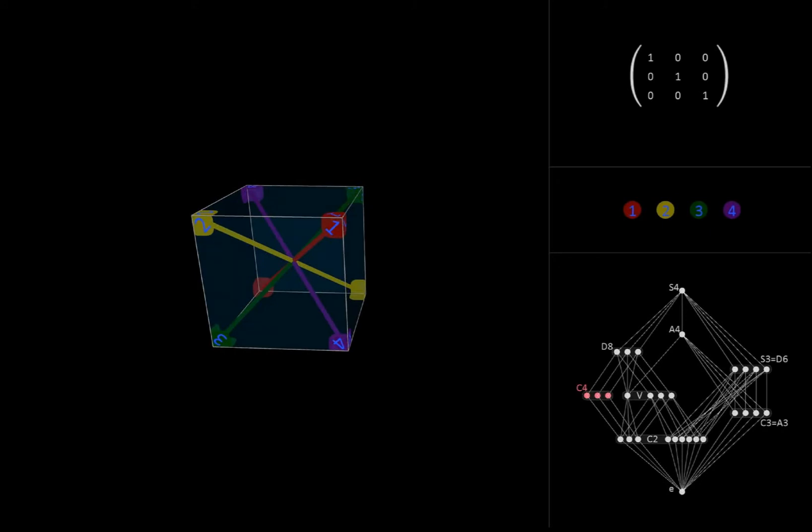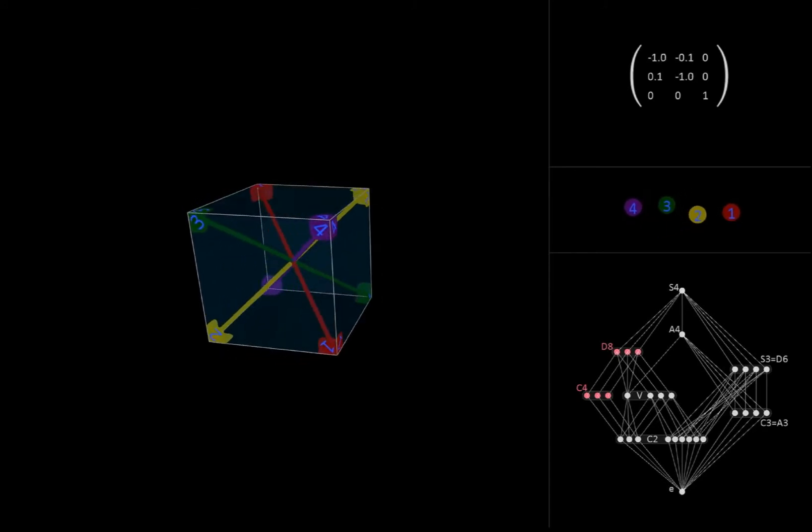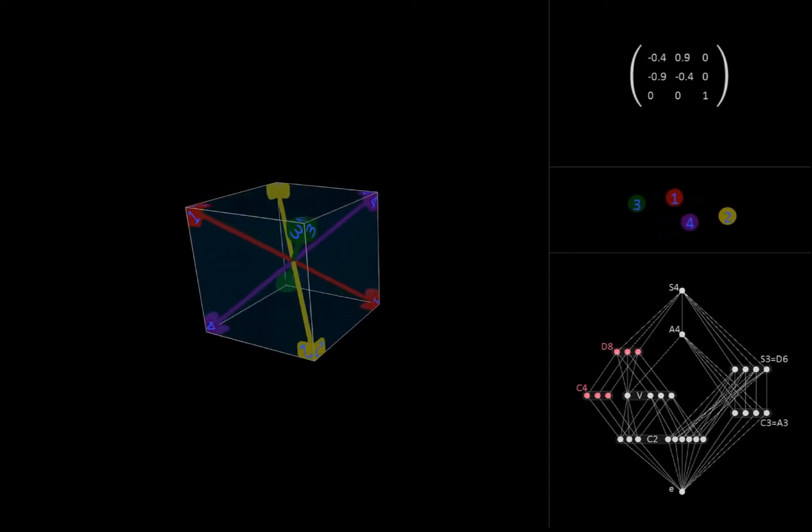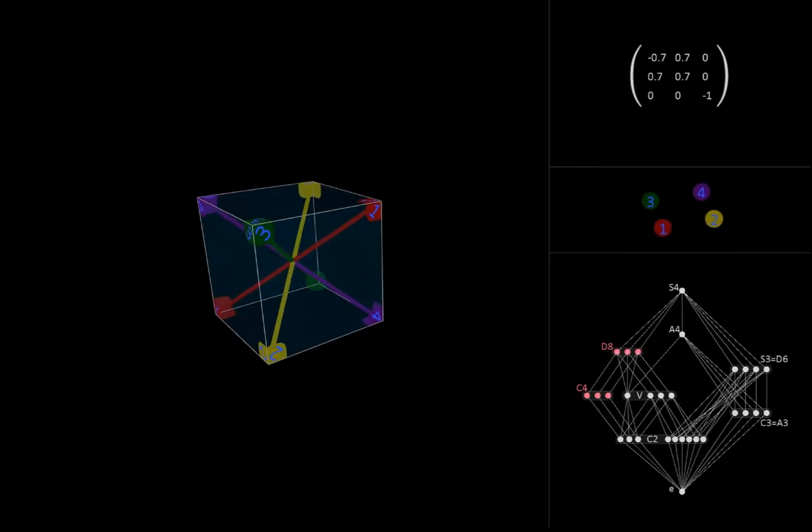Going up the lattice, we can expand each of these C4s to a dihedral group of order 8 by throwing in the additional operation of flipping the axis about which we rotated. For example, taking this cyclic group of four rotations about the z-axis, we get a D8 group by allowing ourselves the additional operation of flipping the cube upside down and combining that with any of the four existing rotations.